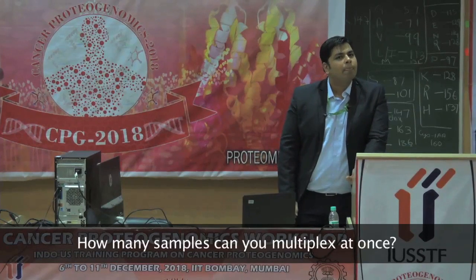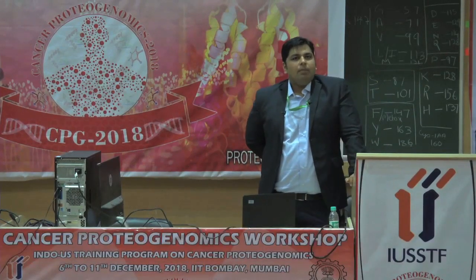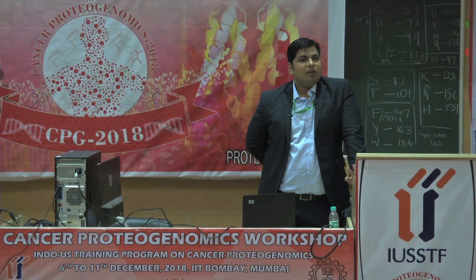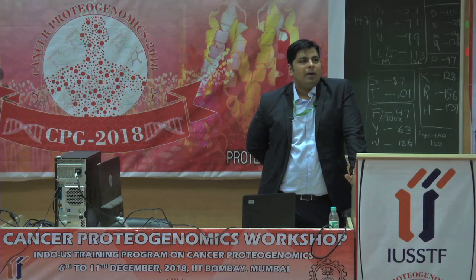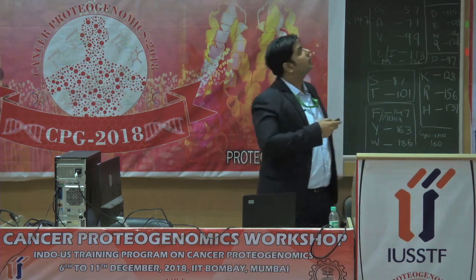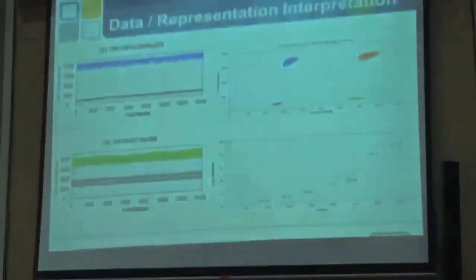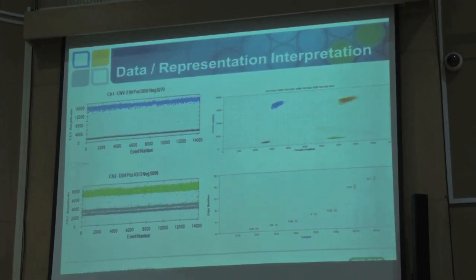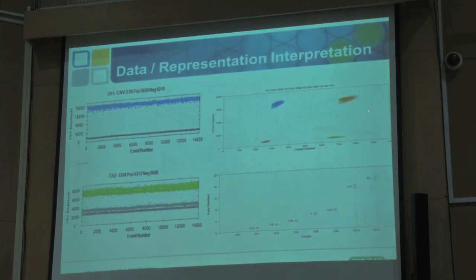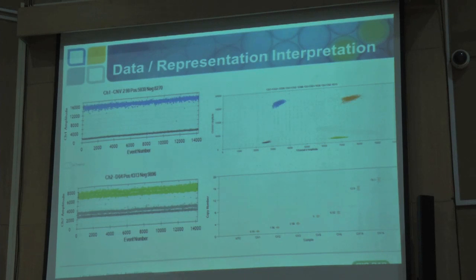How many amplicons can you multiplex at once? At a time you can have two because there are two fluorophores and two lasers, but there are publications where people have done up to 8-plex assays with a single fluorophore. What you simply need to do is keep the size of amplicons variable — at least a 50 base pair difference between the two amplicons. Each cluster you see corresponds to one type of amplicon; if another amplicon is smaller or bigger, it gives a different layer. You can quantify each of these clusters individually in 2D.